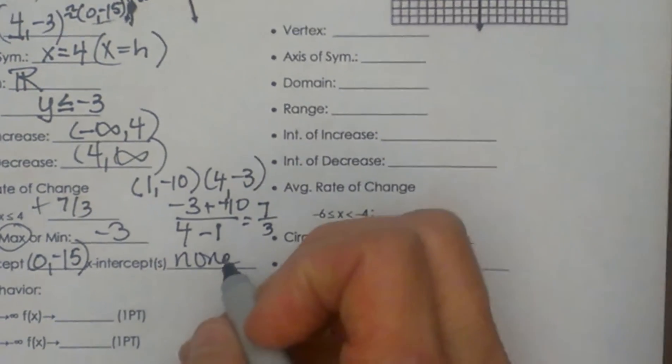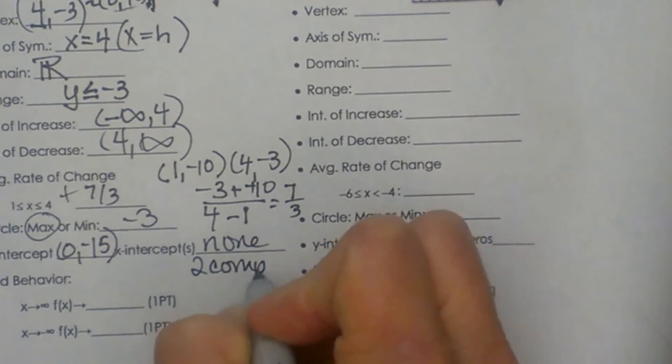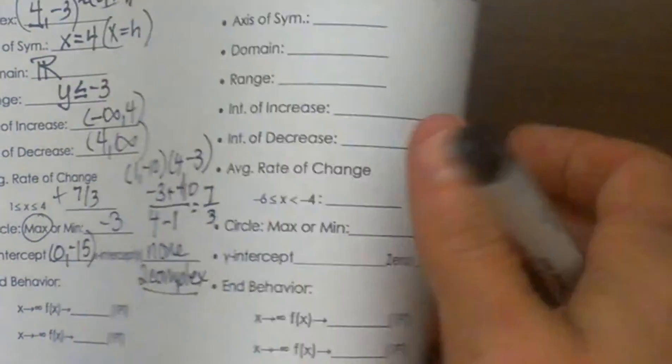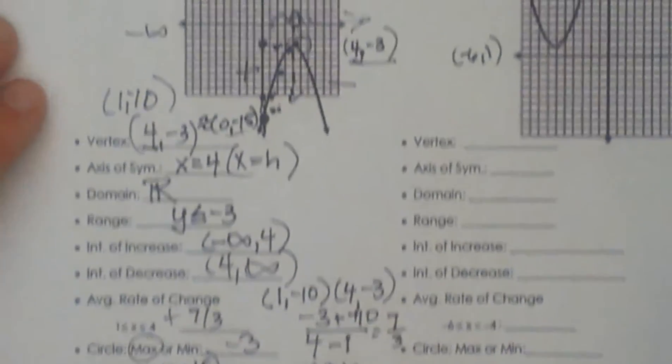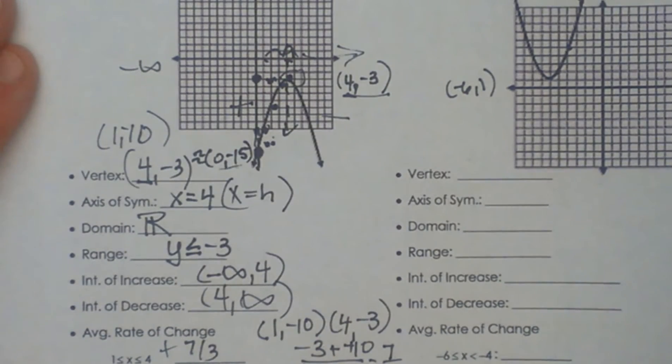But we actually do have some there are just two complex answers. So when we get to the next unit and we are starting to find solutions we are actually going to learn that that one has two complex solutions instead of just none. But there are no real solutions. It never crosses the x axis.